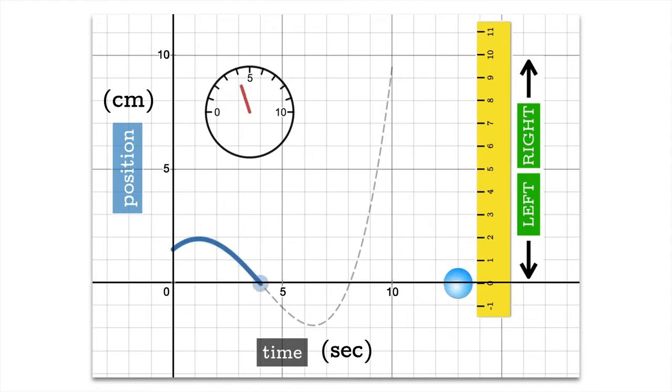You can see as the particle moves left and right we're getting different positions. Sometimes the position is negative and you can see that the particle is slowing down, speeding up, and we're going to try to figure out how to see all of this from the graph.